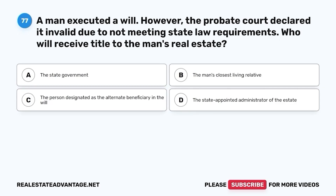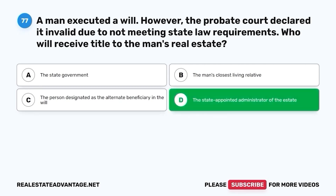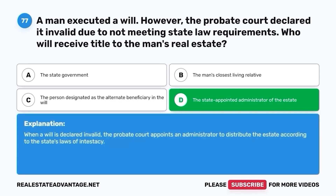Question 77. A man executed a will. However, the probate court declared it invalid due to not meeting state law requirements. Who will receive title to the man's real estate? A. The state government. B. The man's closest living relative. C. The person designated as the alternate beneficiary in the will. D. The state appointed administrator of the estate. The correct answer is D. The state appointed administrator of the estate. When a will is declared invalid, the probate court appoints an administrator to distribute the estate according to the state's laws of intestacy.